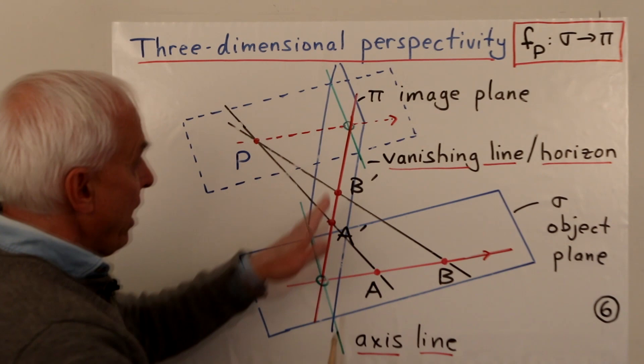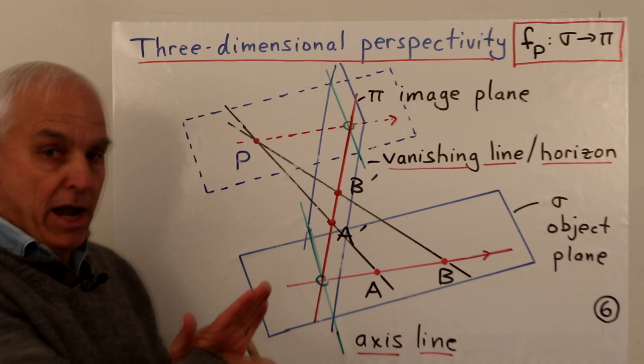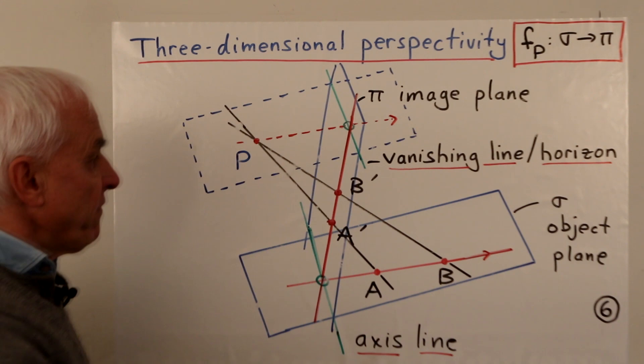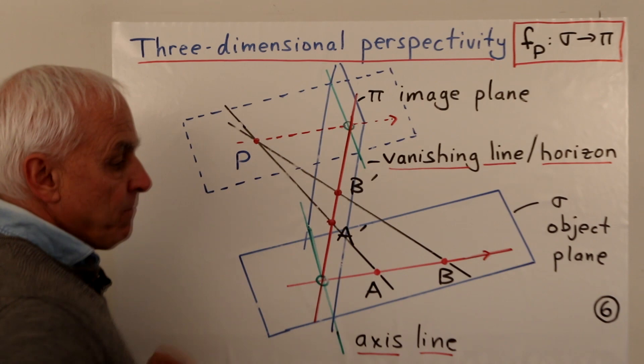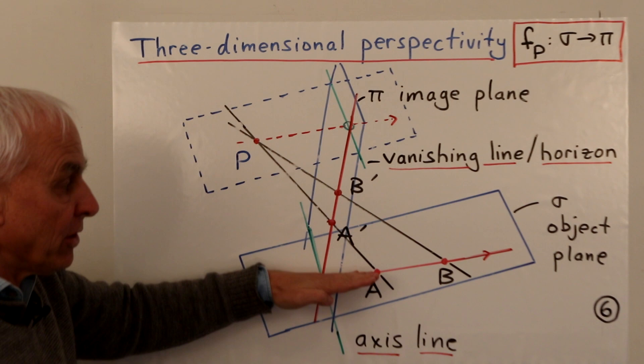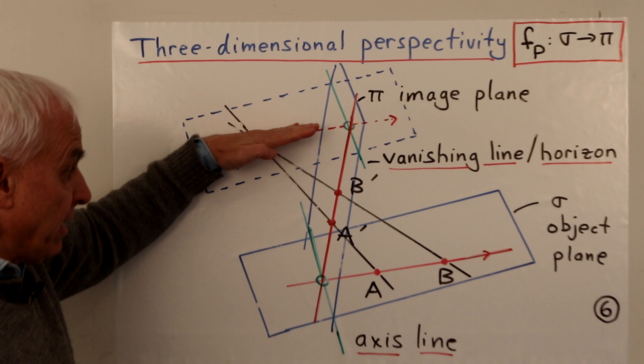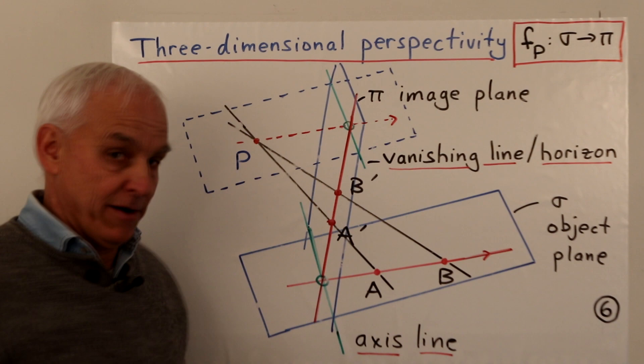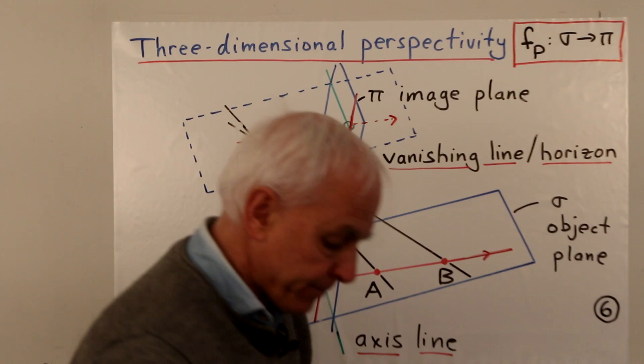Let's clarify some terminology. We have an object plane and an image plane, sigma and pi. These two planes typically meet in a line — the green one there — called the axis line of the perspectivity. There's another important line, the vanishing line, which is the meeting of the image plane with another plane through P that is parallel to the object plane.